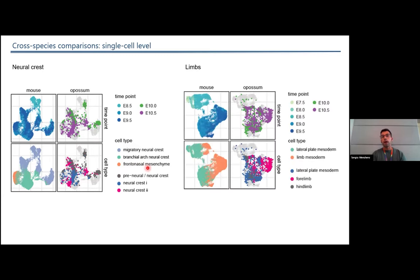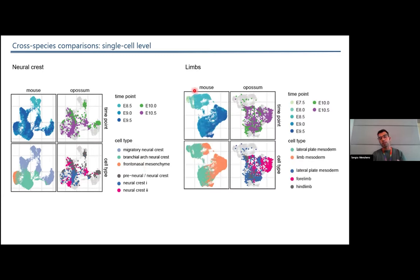And we did the same for another iconic tissue in marsupials, which is the limbs. So we know there's this asynchronicity between the forelimb and the hindlimbs. So we followed just the same approach. And then we noticed that the forelimb cells highlighted in magenta are occupying a much more advanced part of the UMAP while the hindlimb cells were sitting closer to the lateral plate mesoderm. So we are actually seeing at the single cell level that this asynchronicity is already occurring during early organogenesis.